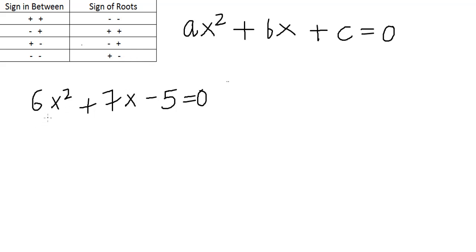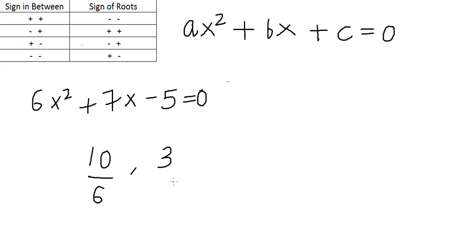Let me clarify this with an example. Suppose our quadratic equation is 6x squared plus 7x minus 5 is equal to 0. The first thing we do is find the product, which is 5 into 6 = 30, and the sum which is 7. We can get product 30 with sum 7 by using 10 and 3. After that, we divide by the coefficient of x squared, which is 6: giving us 10 by 6 and 3 by 6. Now since the sign in between is plus-minus, the sign of our roots will be minus-plus.